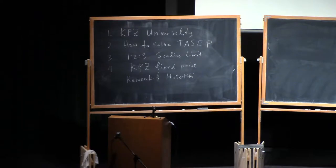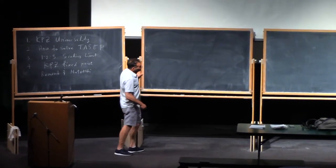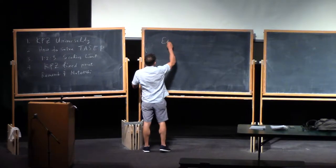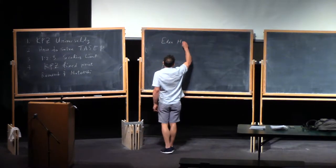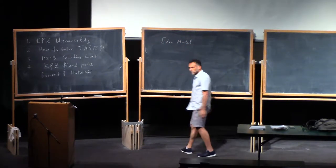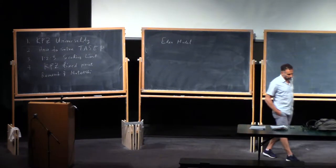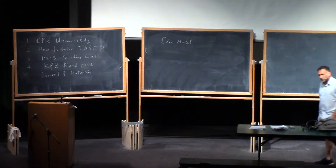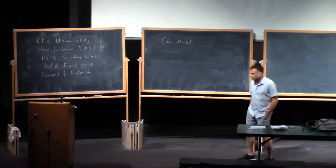Today I'll start by talking about what Pierre talked about, but maybe a little bit slower. Let's start with a simple model just to give an idea of what people are trying to do with this KPZ universality. Let's take the Eden model — this is just for illustrative purposes. It's a model where it's simple to see what the model is, but nobody has any results whatsoever.